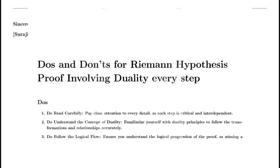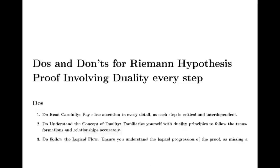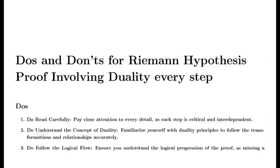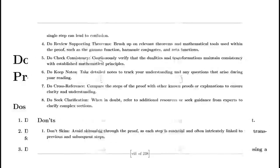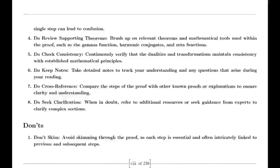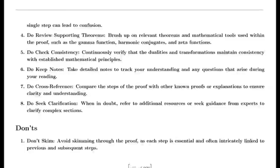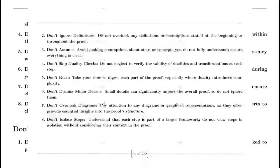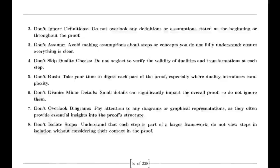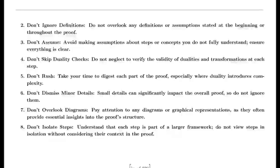Euler also tackled the Basel problem, which was concerned with finding the exact sum of the reciprocals of the squares of the integers. By examining the sine function and its product representation, Euler derived a formula showing that this sum equals π²/6. This result was a significant achievement in mathematics and highlighted Euler's ability to uncover connections between different mathematical concepts.